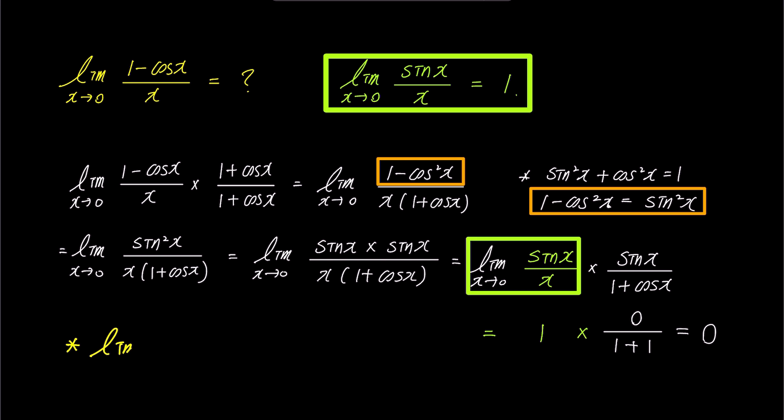So, in conclusion, as x approaches 0, the limit of 1 minus cosine x over x becomes 0.